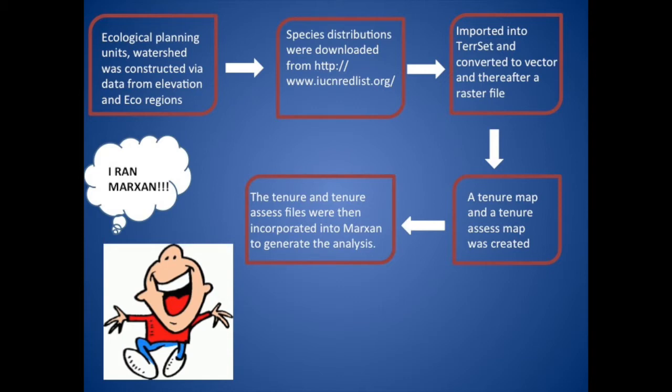The endemic species shapefiles were then converted to vectors and thereafter raster files. Using the data, a 10-year map was created consisting of the agricultural areas, protected areas and artificial land use. After that, a 10-year assess map was created using just the protected areas. Lastly, the 10-year and 10-year assess files were then incorporated into Marksen independently to generate the analysis for an ecological and systematic conservation approach.